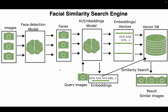In the previous video we had this architecture — we take images, pass them through an embedding model, convert each image into a vector, insert those vectors into a vector database, then query using the same embedding model to create a vector, and use cosine similarity to find similar vectors and map them back to images.